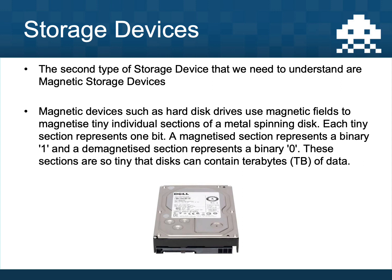The second type of storage device we need to know about are magnetic storage devices — you've probably heard of these as hard disks. They still use a disk but it's hidden inside a metal box. The metal disk spins and has magnetized sections meaning a one, and demagnetized sections meaning a zero. There's a spinning disk and a magnetic arm that reads the disk, a bit like an old-fashioned record player. Those sections are really tiny, so a hard disk can store lots and lots of data.